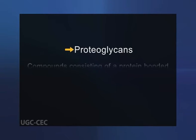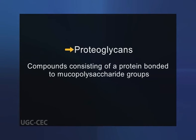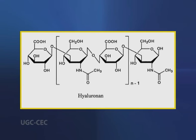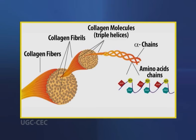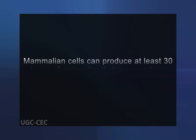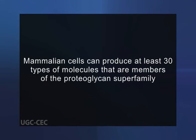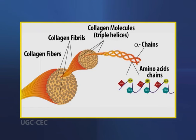Proteoglycans are compounds consisting of a protein bonded to mucopolysaccharide groups, present especially in connective tissue. They are a major component of the animal extracellular matrix, the filler substance existing between cells in an organism. They form large complexes with other proteoglycans, hyaluronan and other fibrous matrix proteins like collagen. Mammalian cells can produce at least 30 types of molecules that are members of the proteoglycans superfamily. These molecules act as tissue organizers, influence the development of specialized tissue, mediate the activities of various growth factors and regulate the extracellular assembly of collagen fibrils.